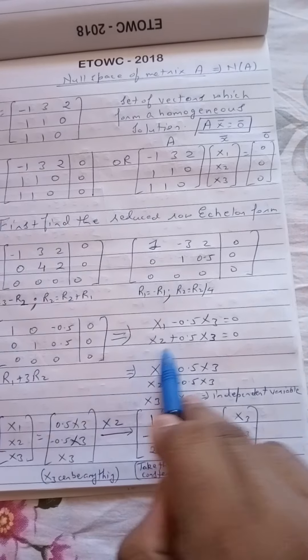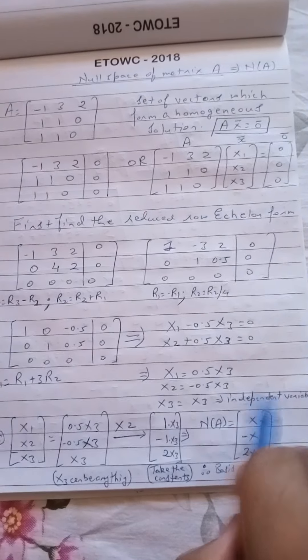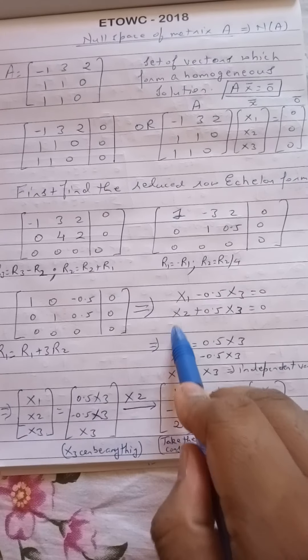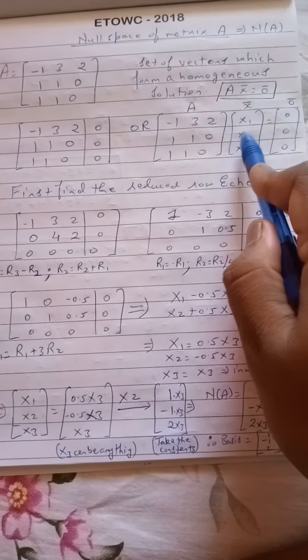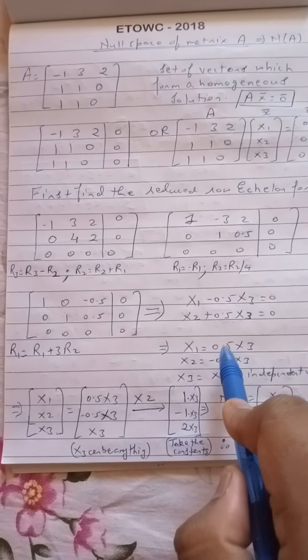Now from here I can write X1 equal to 0.5 X3, X2 equal to minus 0.5 X3. And there is nothing for X3, therefore X3 is just by itself. It's an independent variable. So now X1, X2, X3 on the left hand side correspond to this matrix.